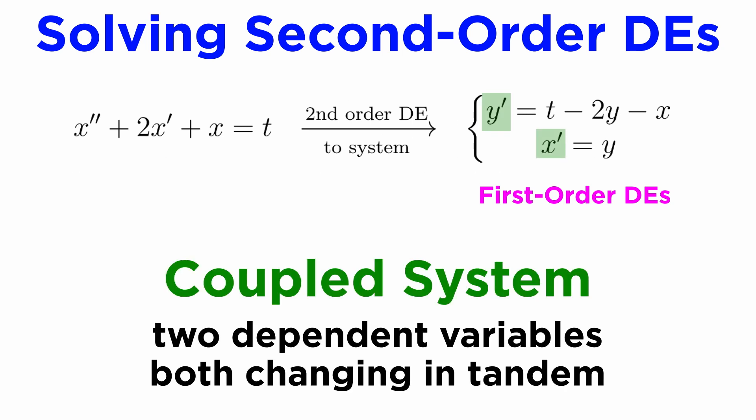This type of system involves two dependent variables, both changing in tandem, which we can also call a coupled system. It comes up in modeling situations where there are interactions between different dynamic processes, so it will be a good idea to study these systems.